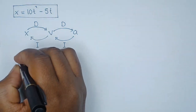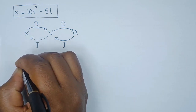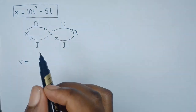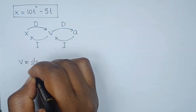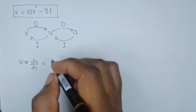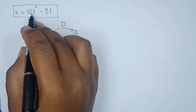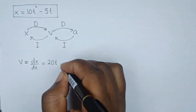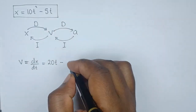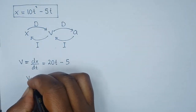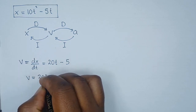So v will be equal to the derivative of x. In other words, v is given by dx/dt, which is the derivative of our function. The derivative will be 2 times 10, that is 20t, minus 1 times 5, that is 5. So the function for velocity becomes 20t minus 5.